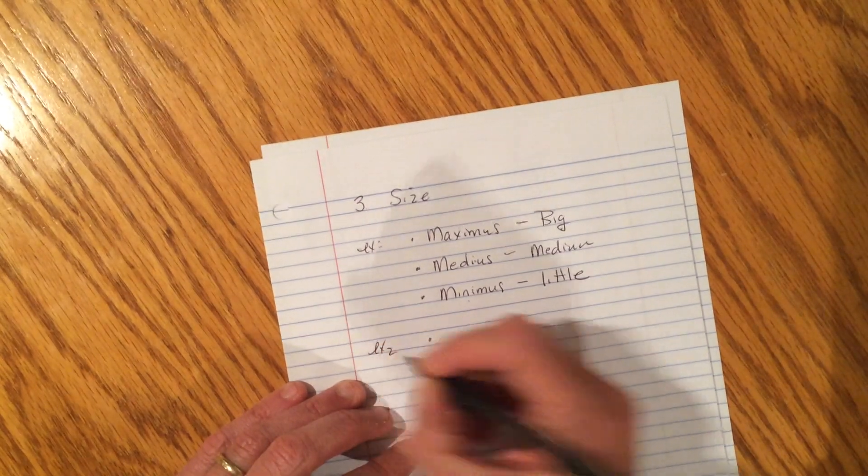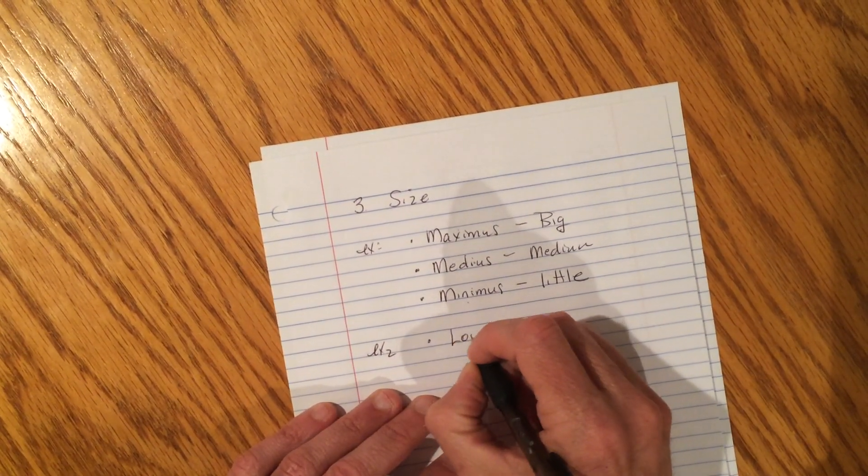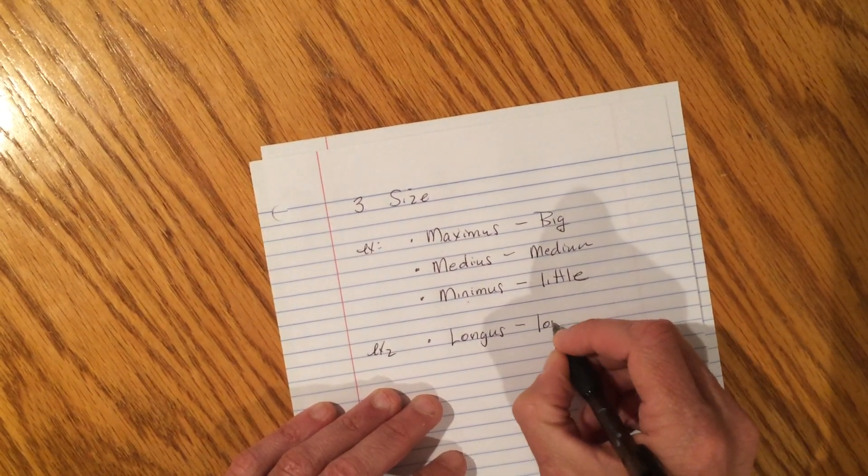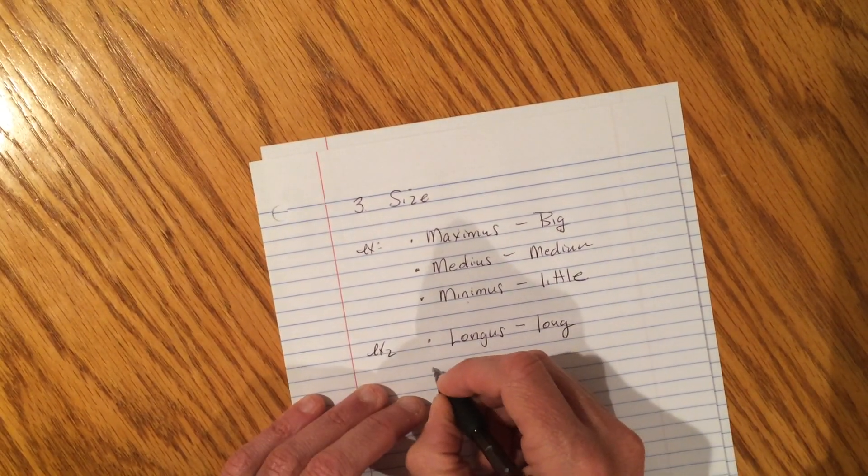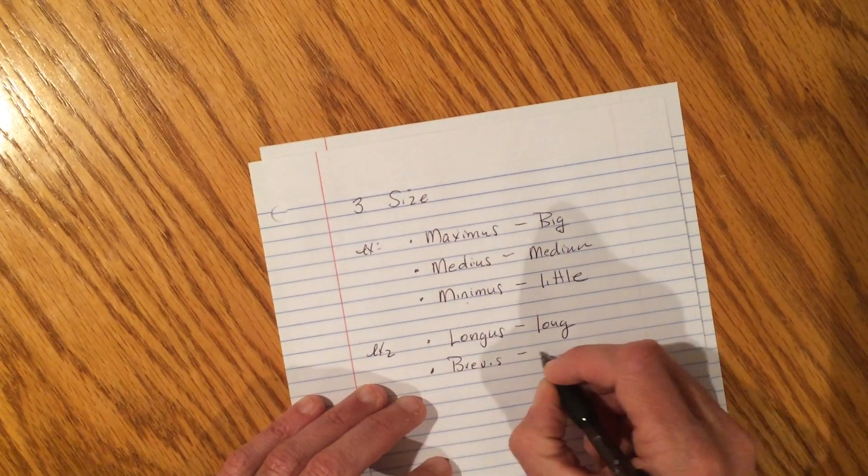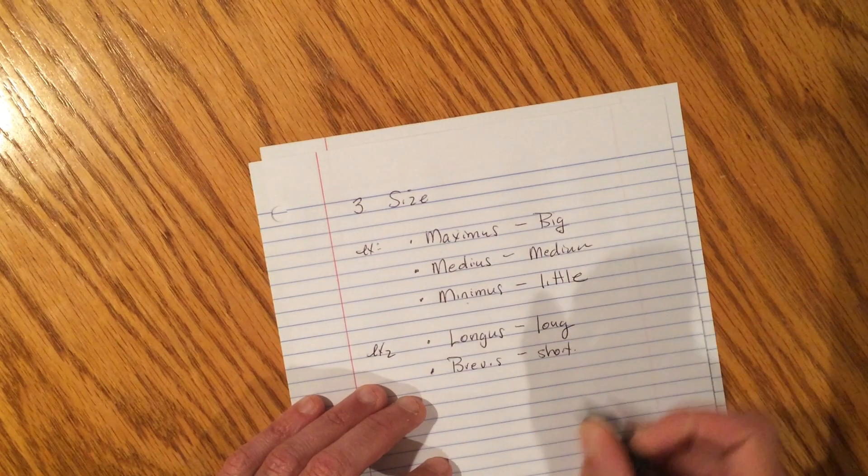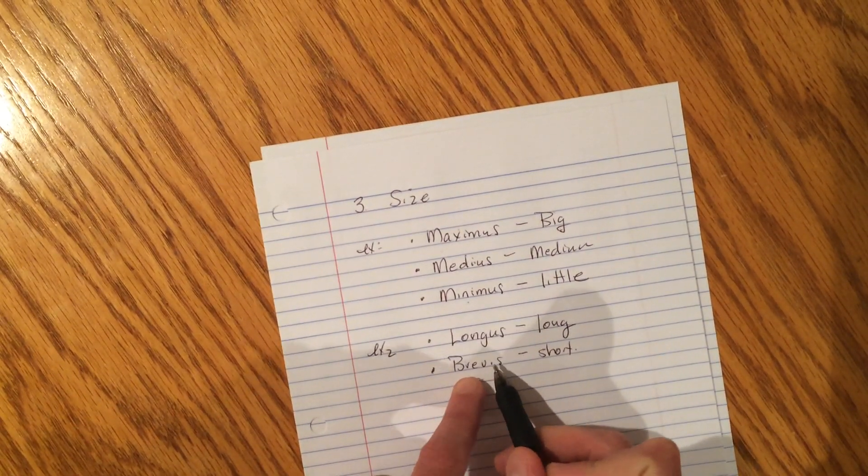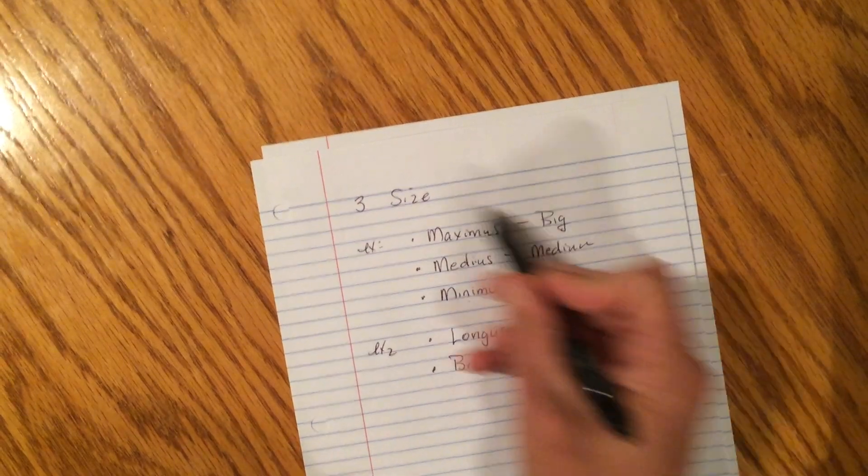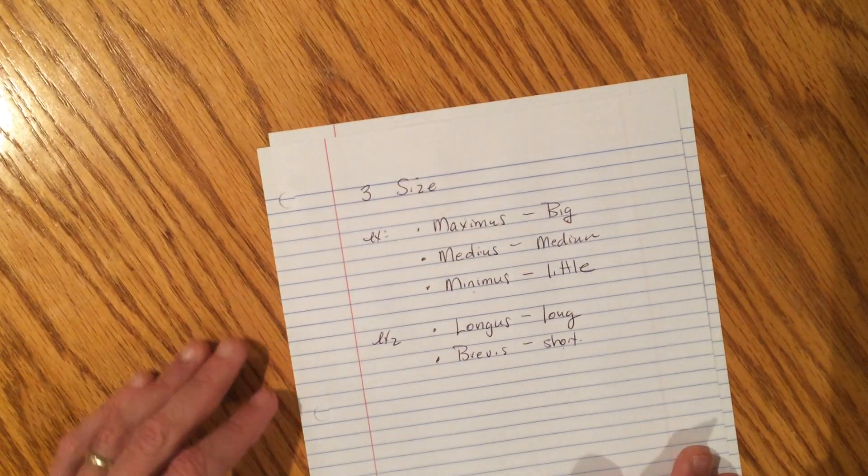Let's do example two. You might see this reference. Longus. I wonder what that means. Long. And then the opposite of that is brevis. And that means short, which comes from the word brevity through the word brief, which means, you guessed it, short. So you might see some size references out there.